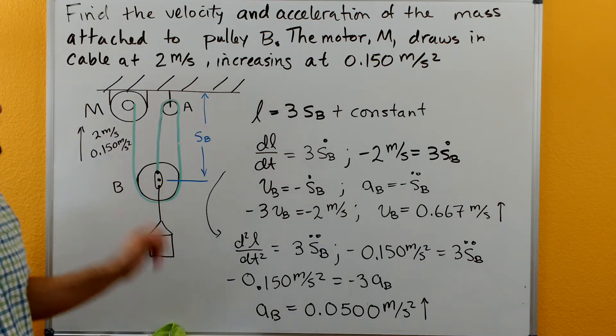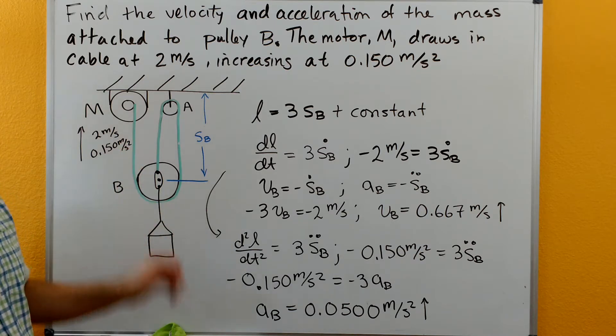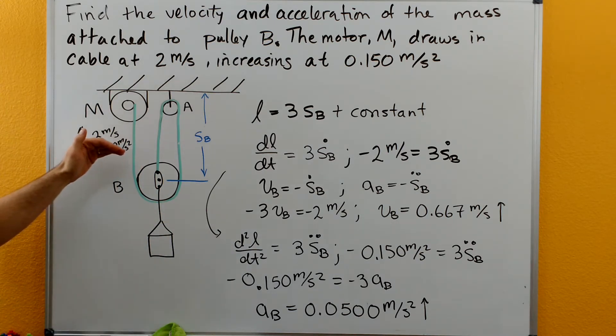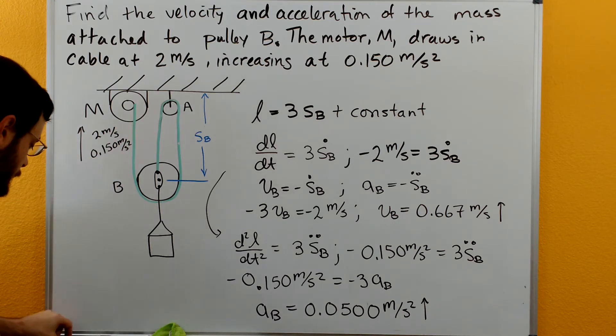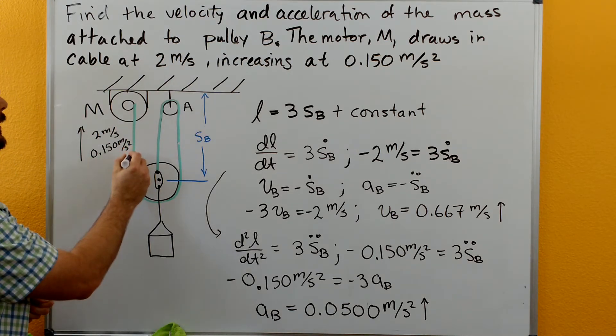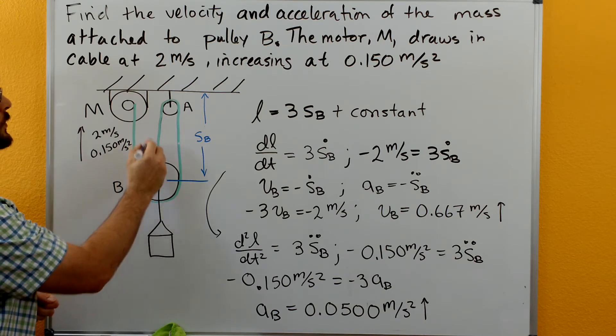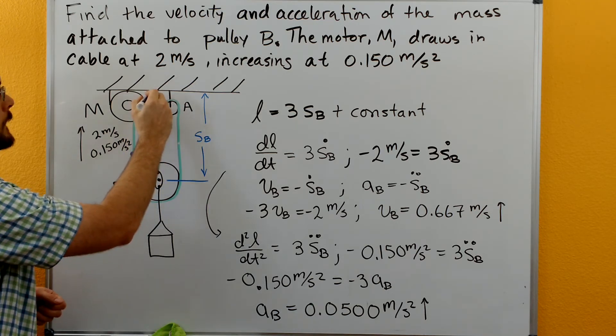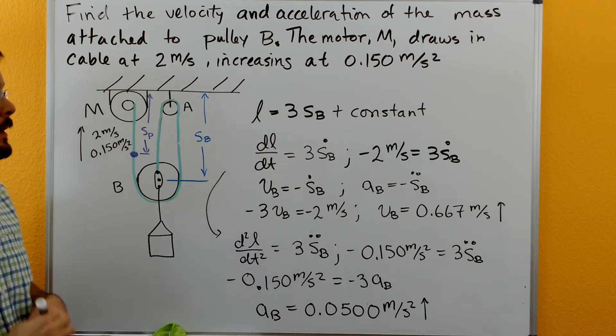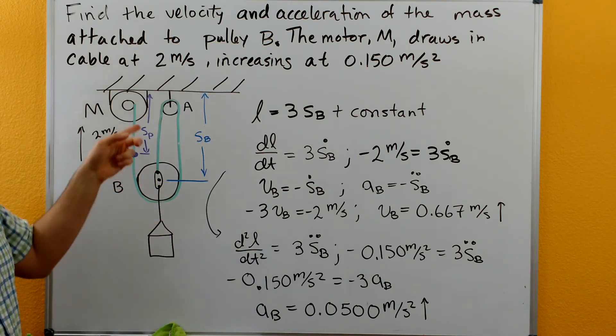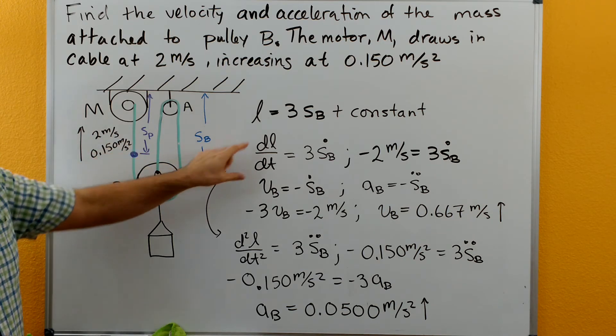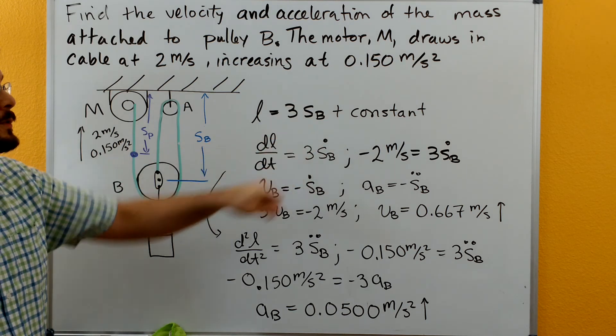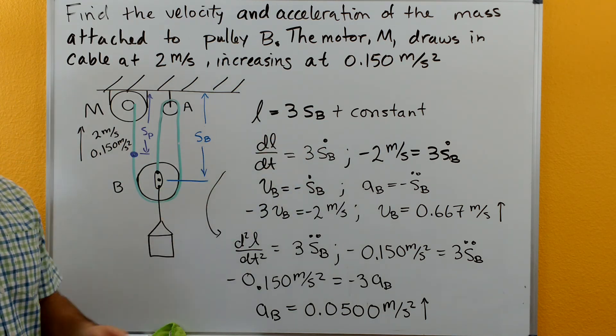There's several different ways you can set up these pulley problems. This is just one of them. You may see solutions where a reference location is marked on the rope over here and is also tracked. Those solutions work the same way this one does. If you're doing a reference mark here, typically you set it up where your dL/dt equals zero, and then you have two terms, but it all works out the same.